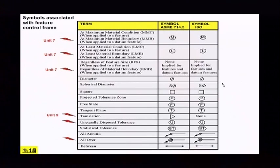Now here's some other symbols that could be associated with a feature control frame. You'll find that we have maximum material condition, which is applied to features. But for datum features, we reference that at maximum material boundary. Least material is still used for features, but when we're referencing datum features, we use least material boundary.